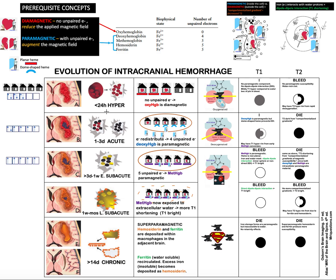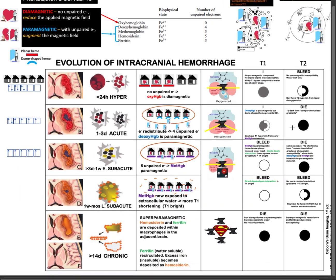For the time frames, I'll leave it up to you to memorize those. If all else fails, you can always revert to a mnemonic for the T1 and T2 signals. The one I use is: I bleed I die, bleed die, bleed bleed and die die — where I is iso, bleed (B) is bright, and die (D) is dark.